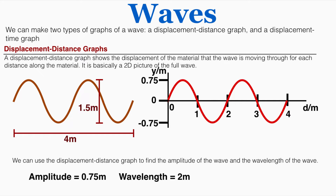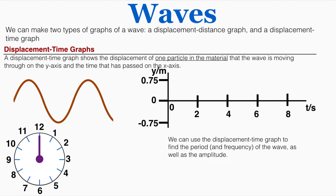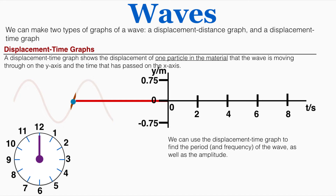We can also make a displacement-time graph of the wave; this is a little more complicated. A displacement-time graph shows the displacement of one particle in the material on the y-axis and the time elapsed on the x-axis. I'm going to focus on just one point and observe what it does as the wave moves through it. I've sectioned off eight seconds on this graph, and for every moment in time I'll graph the vertical displacement of that particle — making a line that shows exactly how high up the particle is at any one second of time.